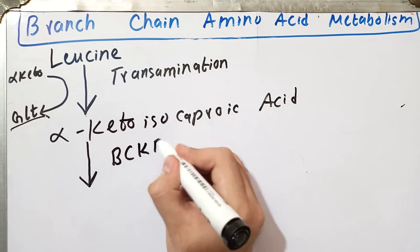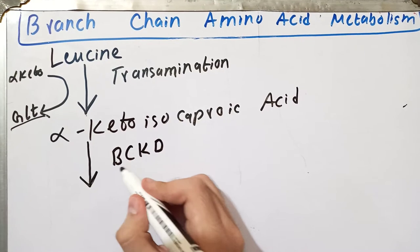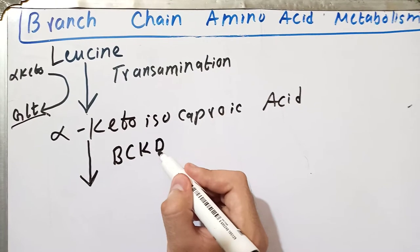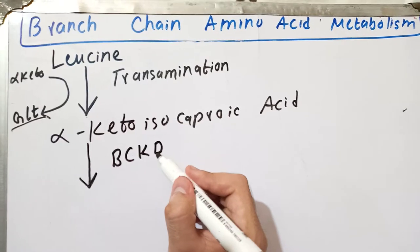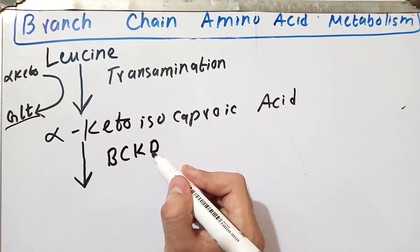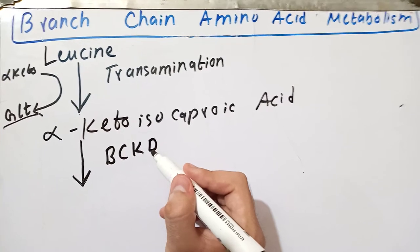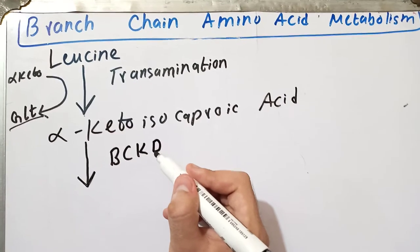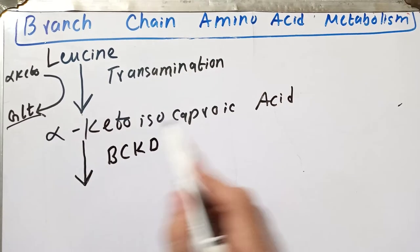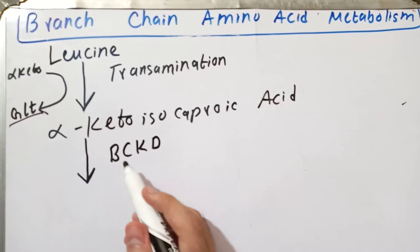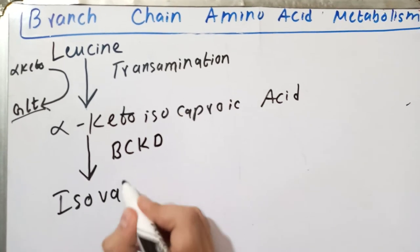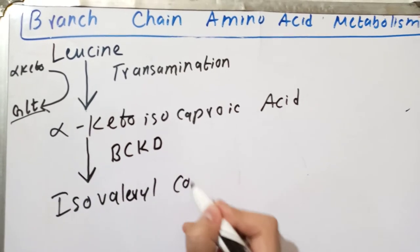The alpha-keto isocaproic acid will undergo a branched-chain alpha-keto acid dehydrogenation reaction, catalyzed by the enzyme called branched-chain alpha-keto acid dehydrogenase. These are similar enzymes to those that cause the conversion of pyruvate into acetyl-CoA by the pyruvate dehydrogenase complex, or the conversion of alpha-ketoglutarate into succinyl-CoA by the alpha-ketoglutarate dehydrogenase complex, and the coenzymes will also be the same. The alpha-keto isocaproic acid is converted into a compound called isovaleryl-CoA.